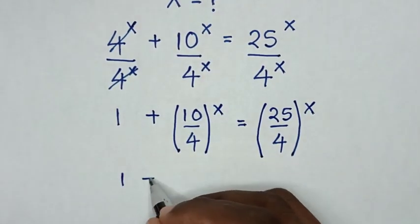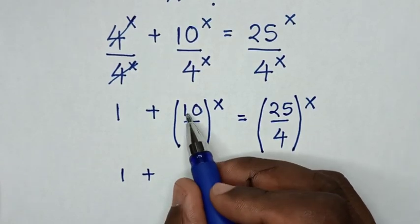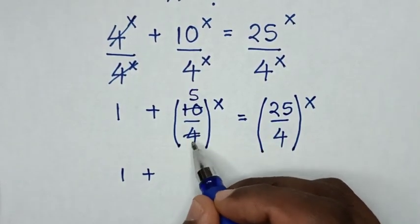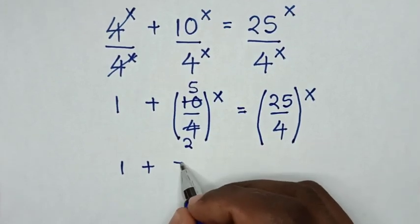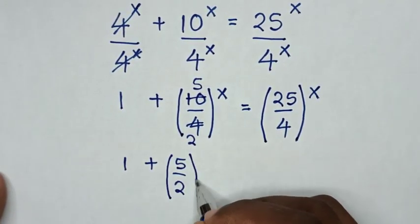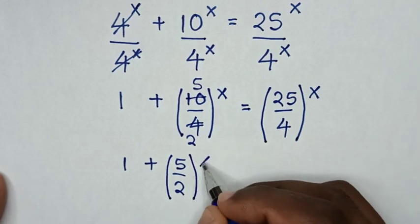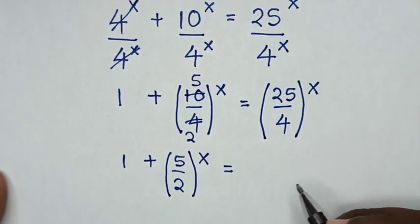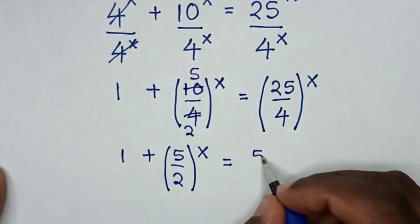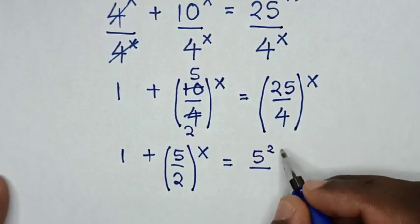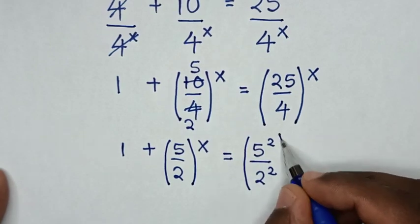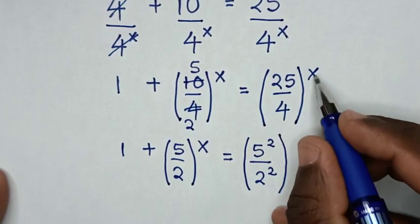Our equation will be 1 plus — to simplify, 10 divided by 2 is 5 and 4 divided by 2 is 2 — so it will be (5 over 2) bracket power of x is equal to, and here 25 is the same as 5 squared over 4, which is the same as 2 squared, then bracket power of x.